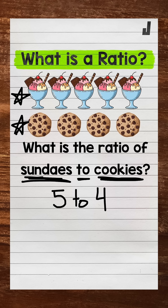Our next way to write a ratio, we can use a colon. So five colon four. We put a colon in between the quantities, and that shows that we have five to four — five sundaes to four cookies.